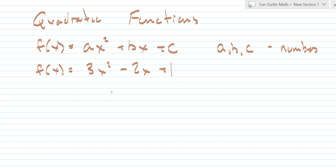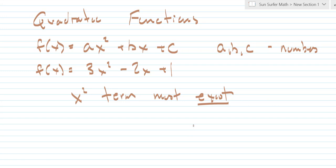The important thing that makes this a quadratic is the x squared term must be present. There must be an x squared term — that is what makes it a quadratic function.